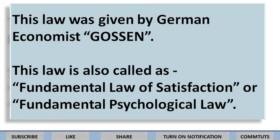यह law दिया था German economist Gossain ने। यह Gossain का first law था, इसलिए law of diminishing marginal utility को 'First Law of Gossain' भी कहते हैं। इसके साथ ही इसे 'Fundamental Law of Satisfaction' और 'Fundamental Psychological Law' भी बोलते हैं। So the another names are: (1) First Law of Gossain, (2) Fundamental Law of Satisfaction, (3) Fundamental Psychological Law.